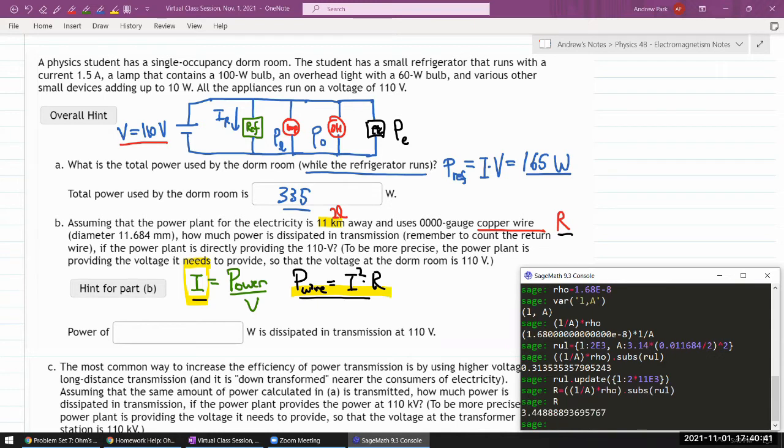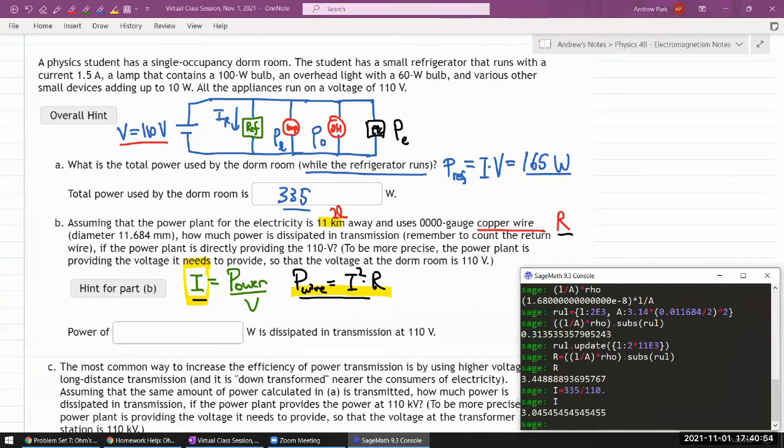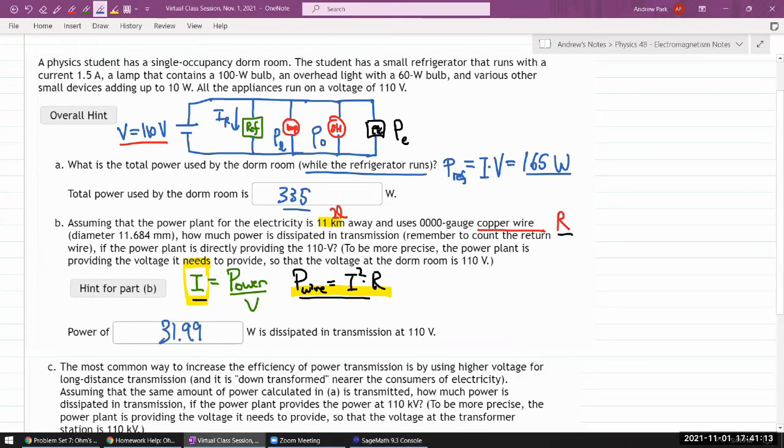So now I need a current. My current would be the power, 335 watt, divided by the voltage, 110. I'm putting this dot here so that it does the floating point calculation. It just looks nicer to me. So power dissipated in the wire is the current squared times the resistance. So 31.99 watt. 31.99 watt. It's pretty large, given that the power used by the dorm room is 300 watt. It's almost 10% of the power.